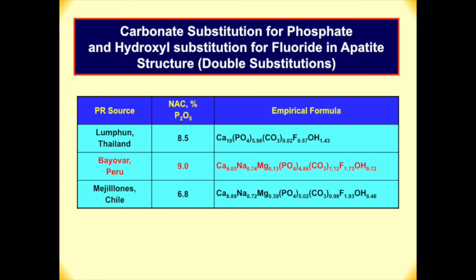Even though the carbonate substitution of Biova is less than North Carolina rock and others, the other rock from Chile shows OH substitution not so high and carbonate substitution not so high compared with Biova. So that rock has only 6.8 neutral ammonium citrate solubility. Double substitution depends on the degree of OH-for-fluorine substitution and carbonate-for-phosphate substitution, and Biova is particularly high in both. This explains why Biova rock is so reactive.